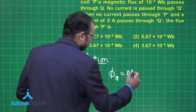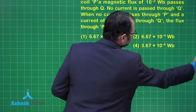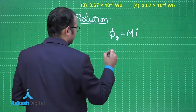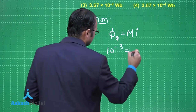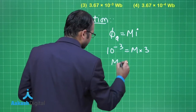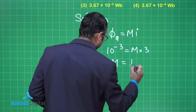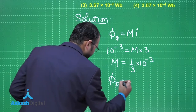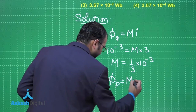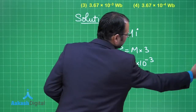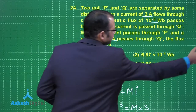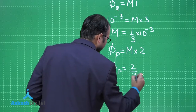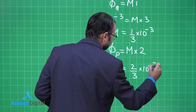No current passes through Q. When no current passes through P and a current of 2 ampere passes through Q, what is the flux through P? In the first case, flux through Q = M × I, so 10⁻³ = M × 3, giving M = (1/3)×10⁻³ H. For the second case, flux through P = M × 2 = (2/3)×10⁻³ Weber.